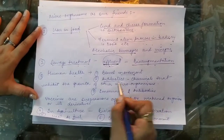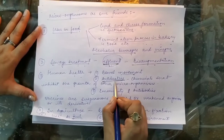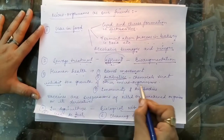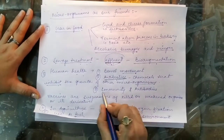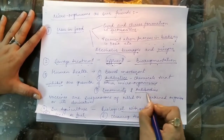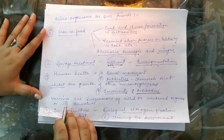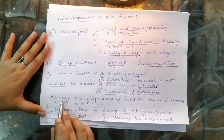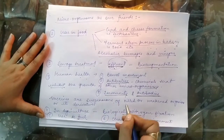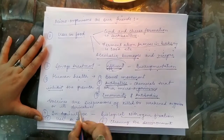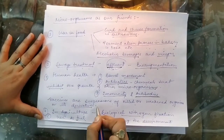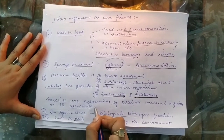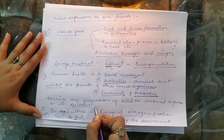Microorganisms are also used in making antibiotics. Antibiotics are chemicals that inhibit or stop the growth of other microorganisms, and they also provide immunity to the human body by generating antibodies. For building immunity, children are given vaccines, which are suspensions of killed or weakened organisms or their derivatives. These vaccines create a memory bank that builds up antibodies which can be used anytime later in life.